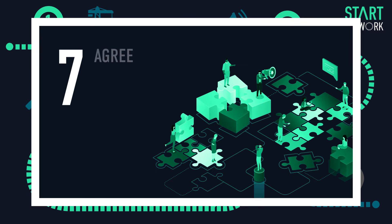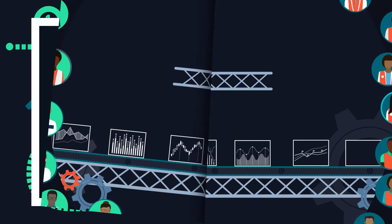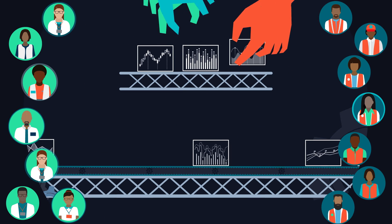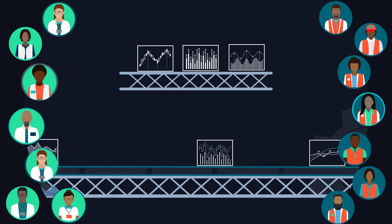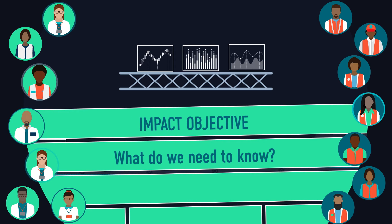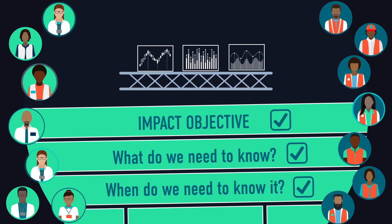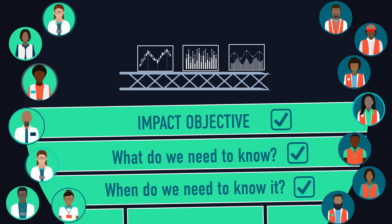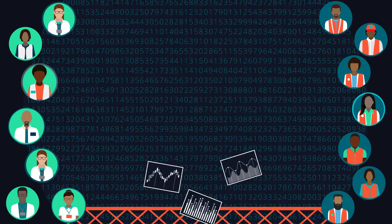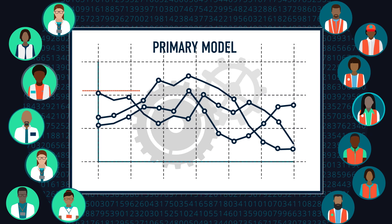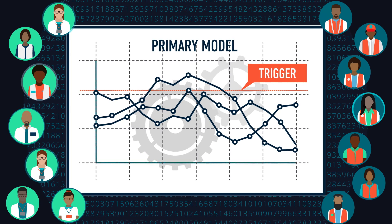Checkpoint 7: the providers and users should agree which models or datasets provide the best predictors of historical outcomes. This will determine which data and models are most reliable in answering the initial questions set out in the decision framework in Checkpoint 1, and therefore should form the primary model and data on which the main trigger can be set.